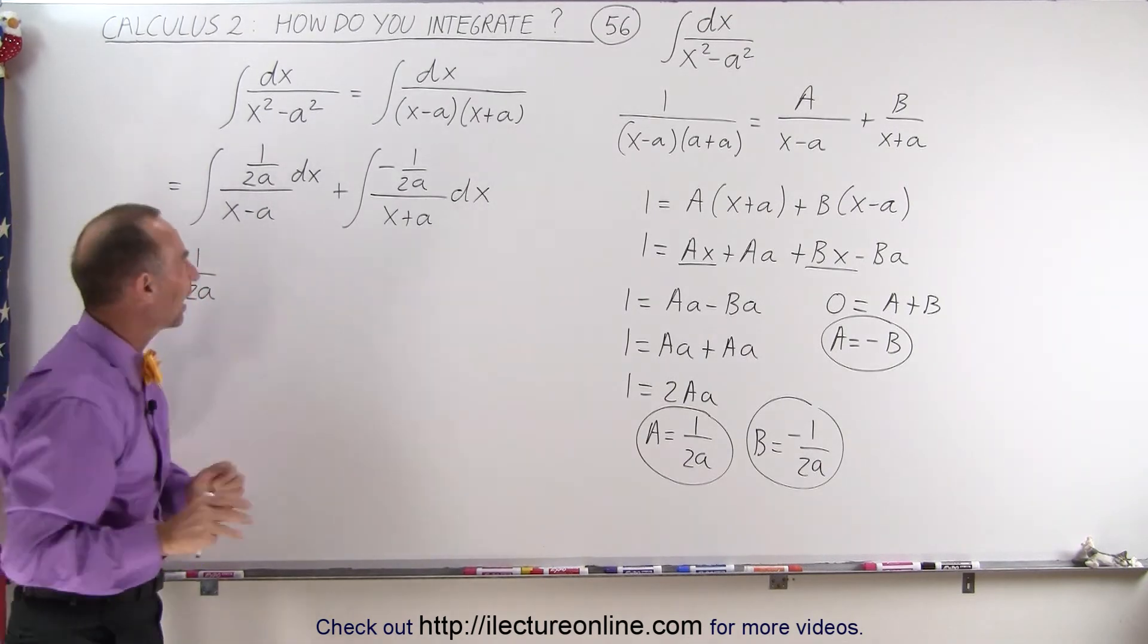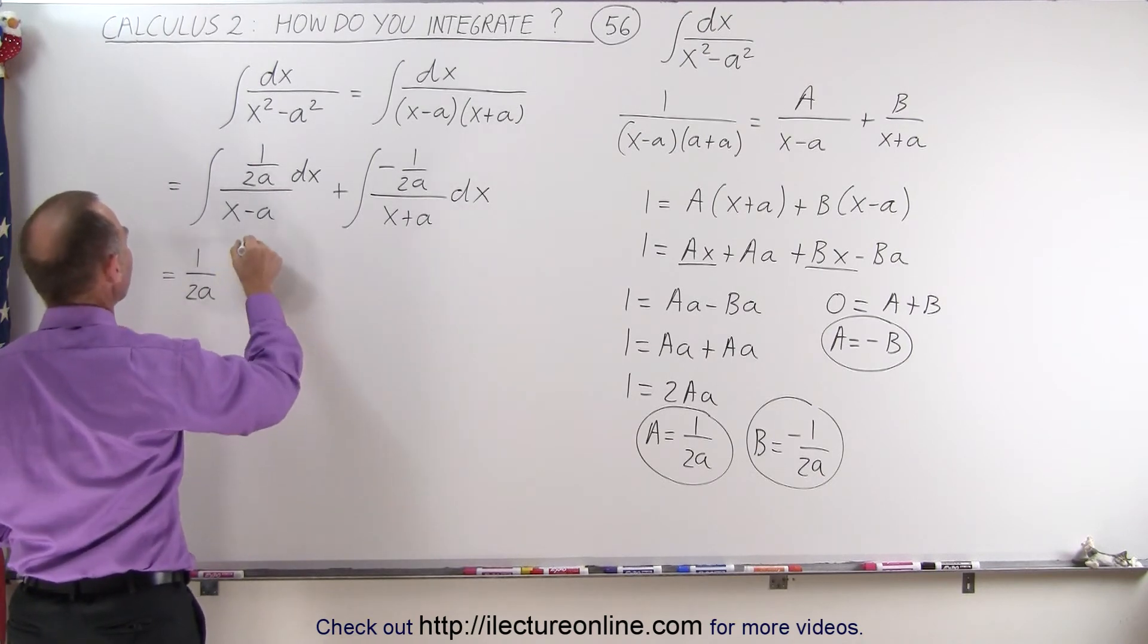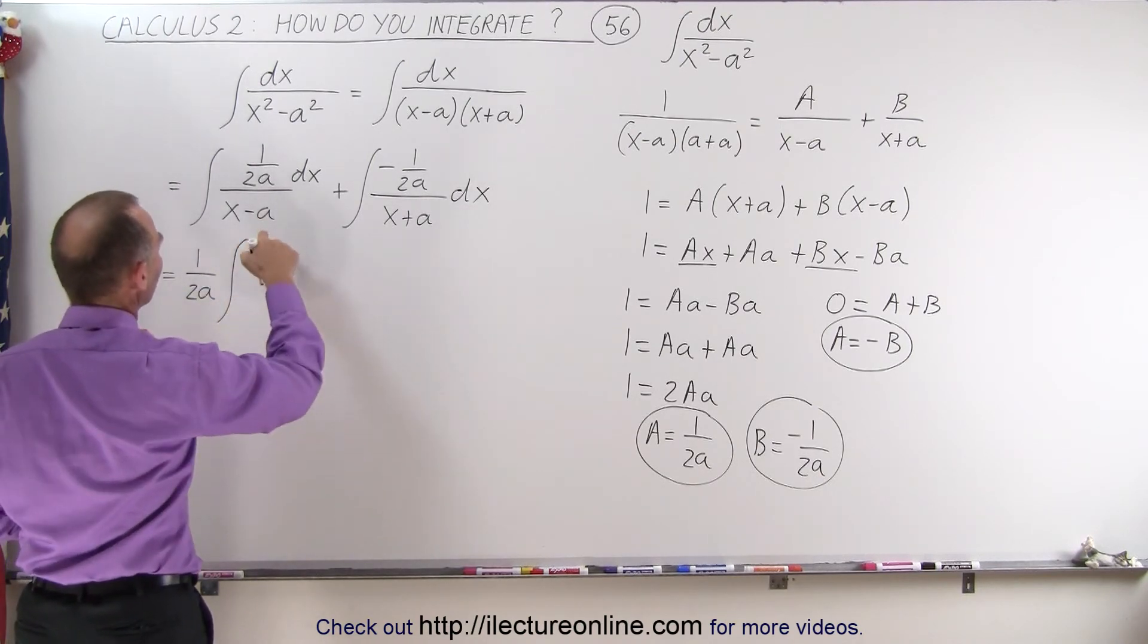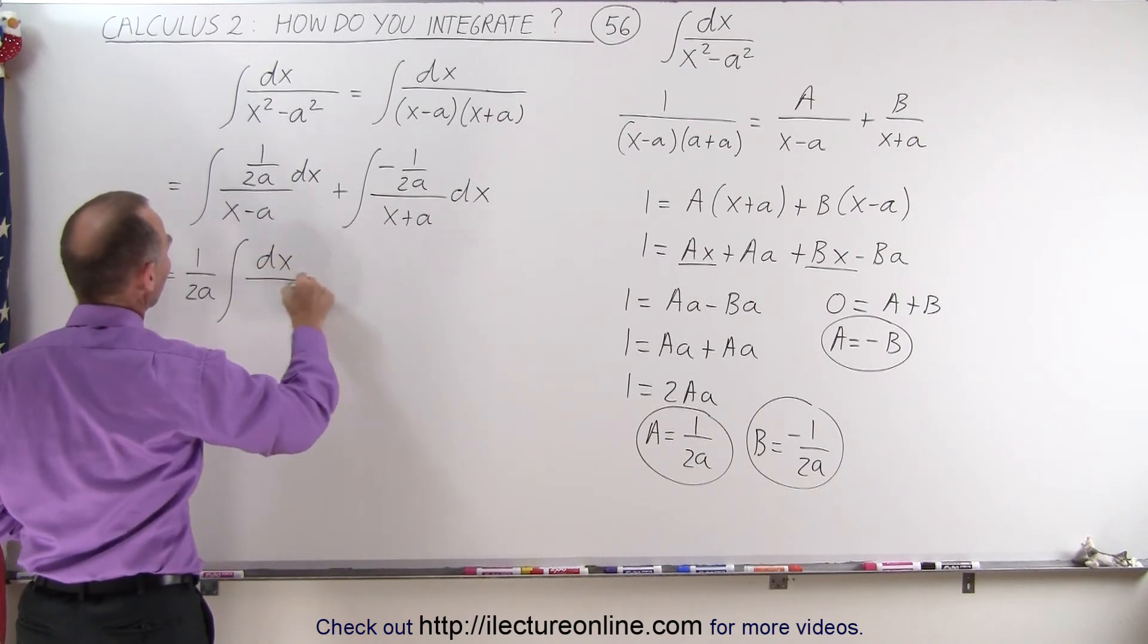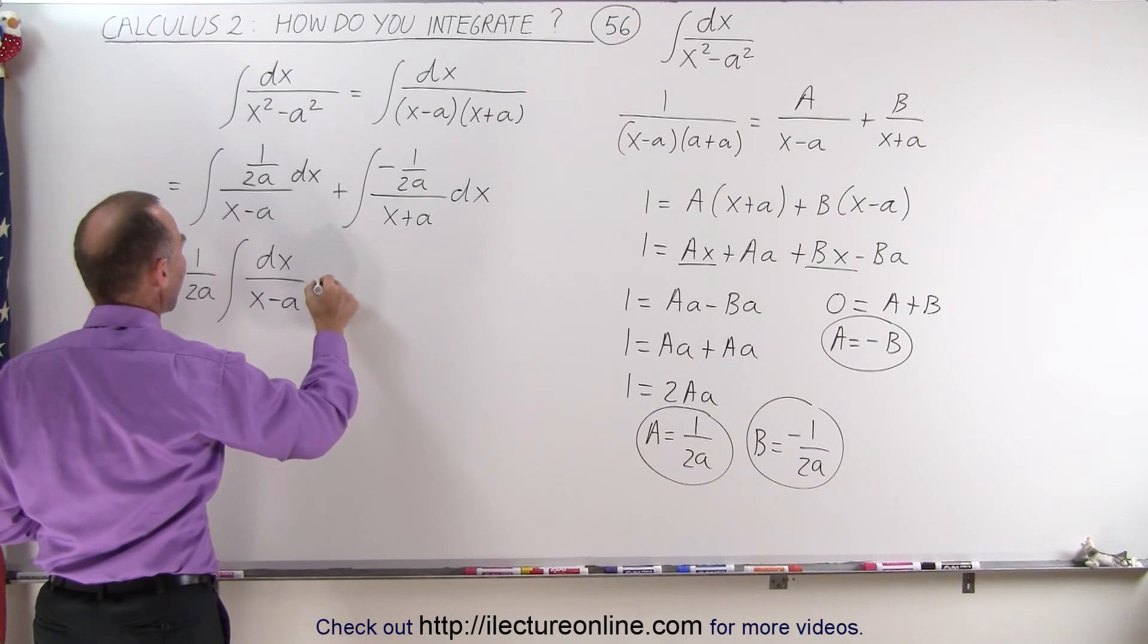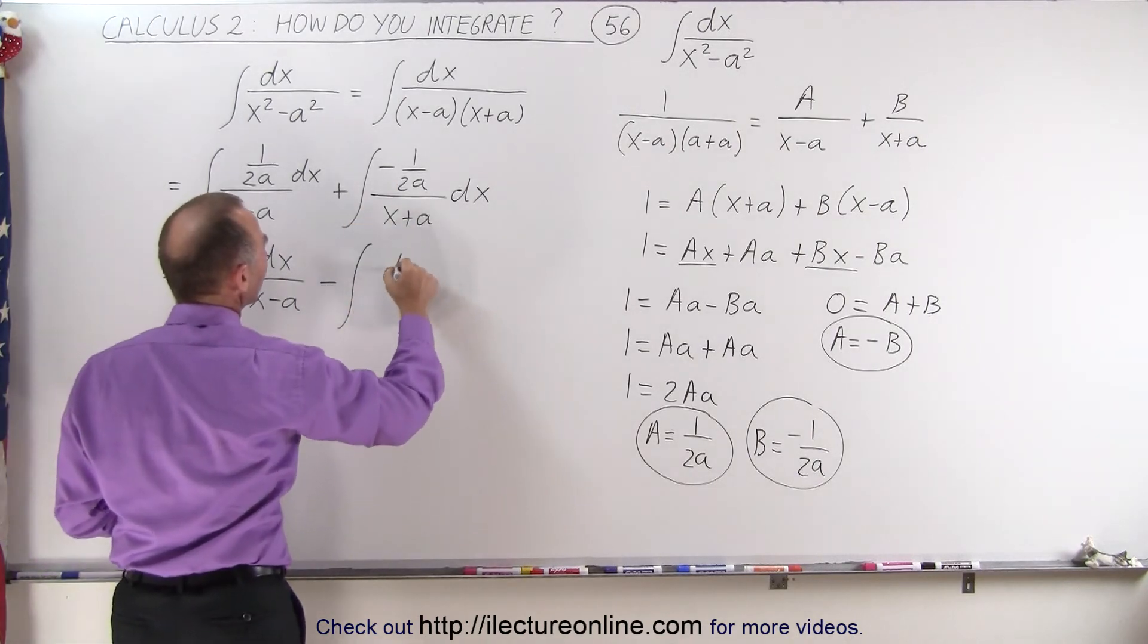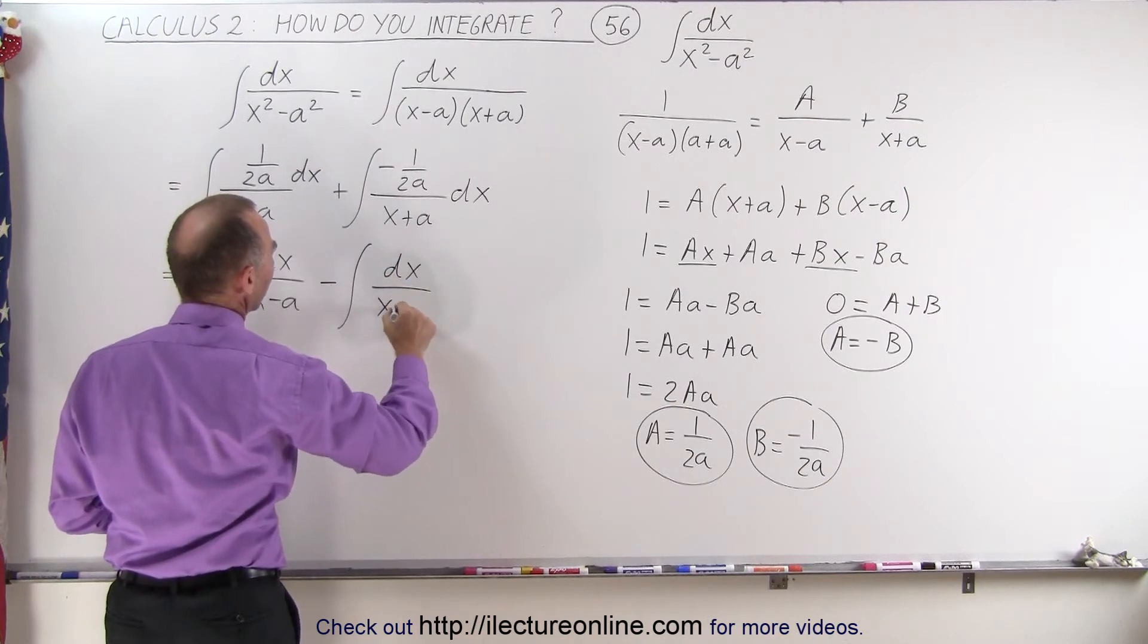I was thinking ahead, but I had the wrong thought. So let's start over again. Pull out a 1 over 2a times the integral of, the first integral is going to be dx over x minus a.